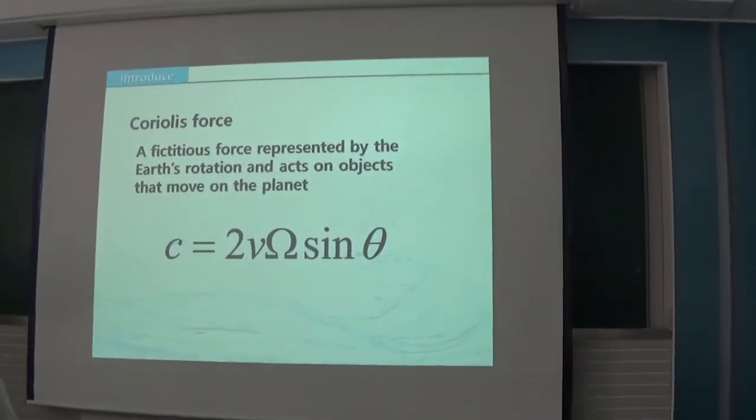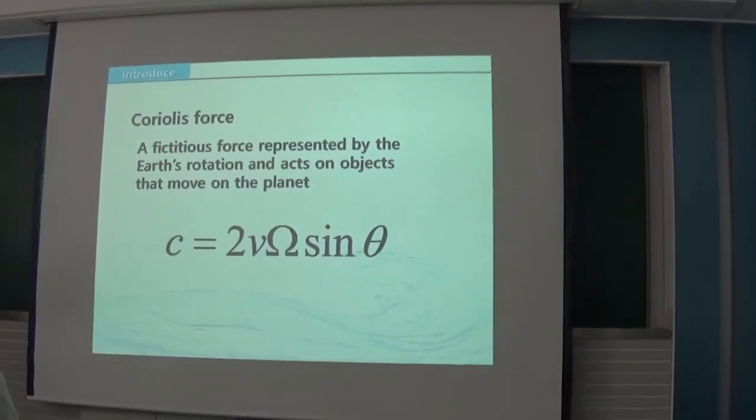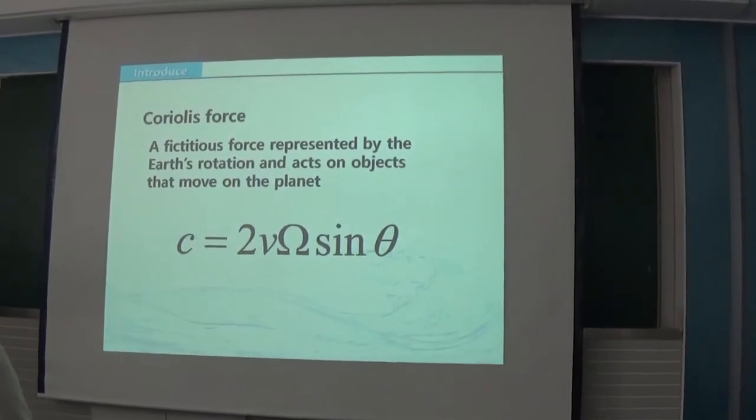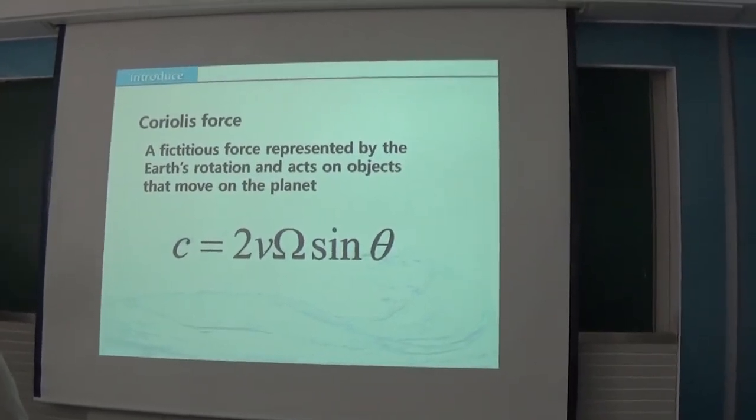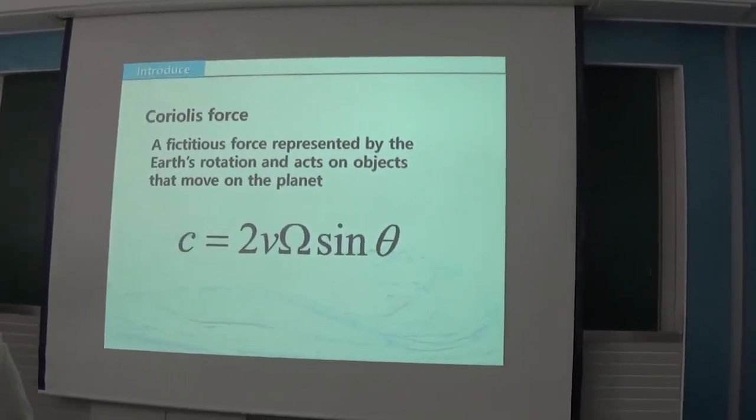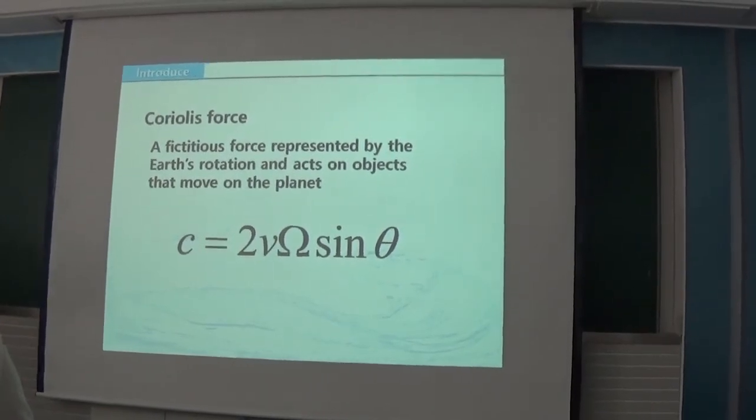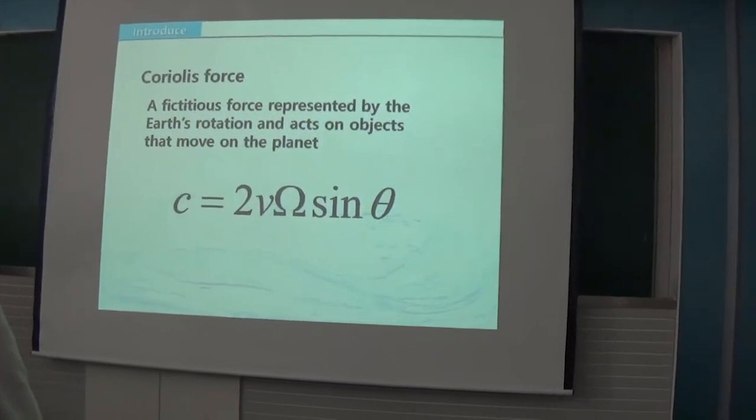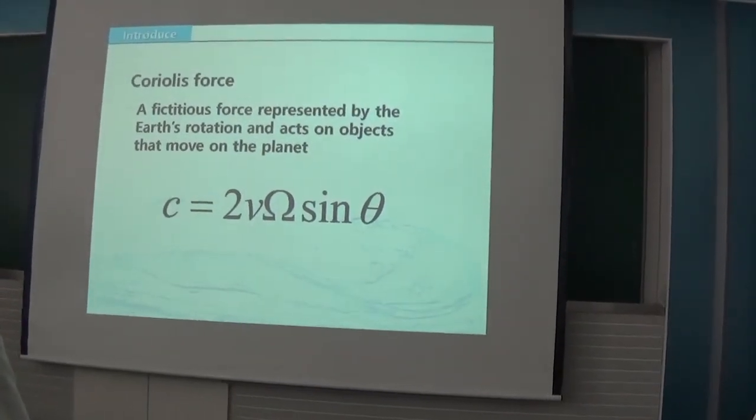This equation shows proportional relation between Coriolis force and latitude and movement speed. The bigger the velocity, the bigger the Coriolis force. This equation also shows that when the object is on the equator or has no speed, there is no Coriolis force working.